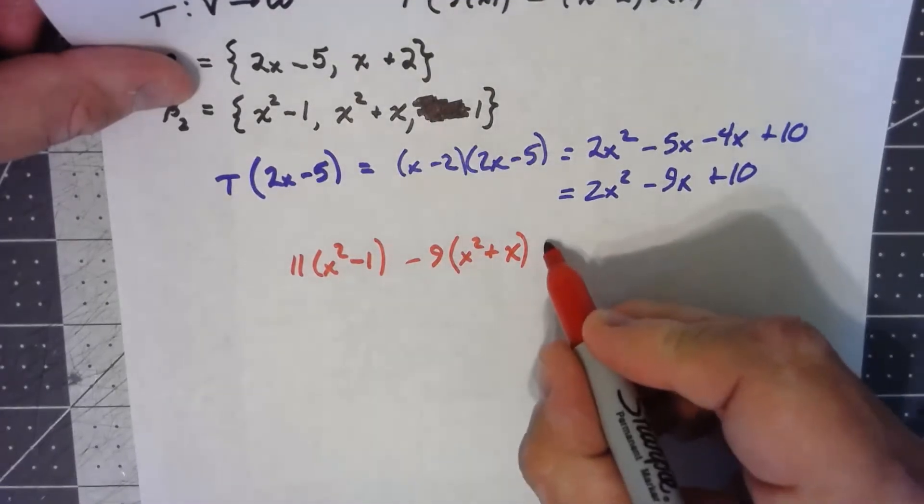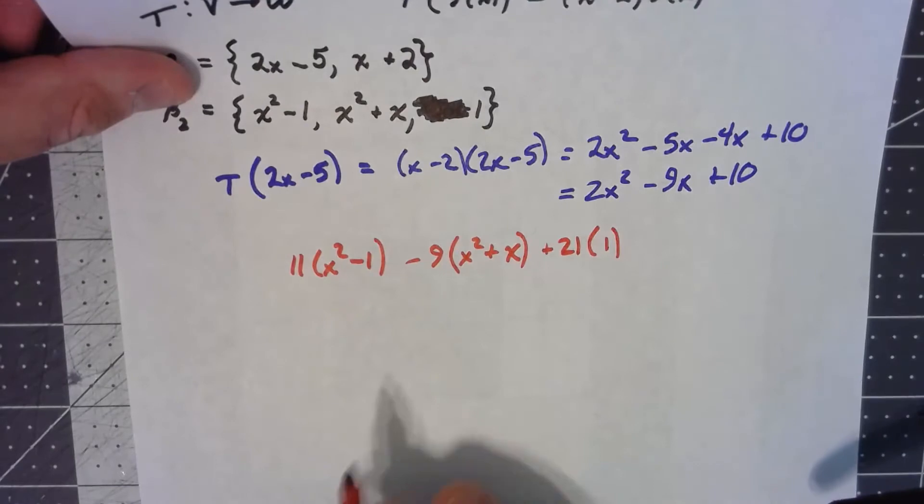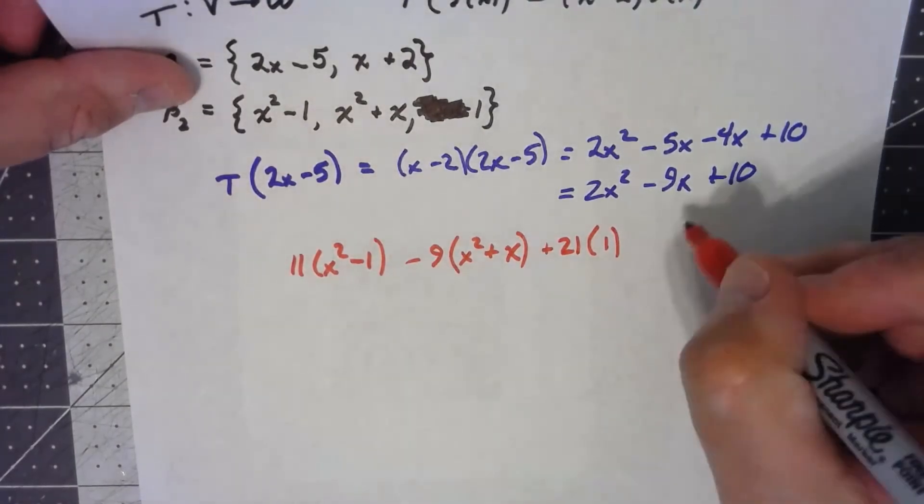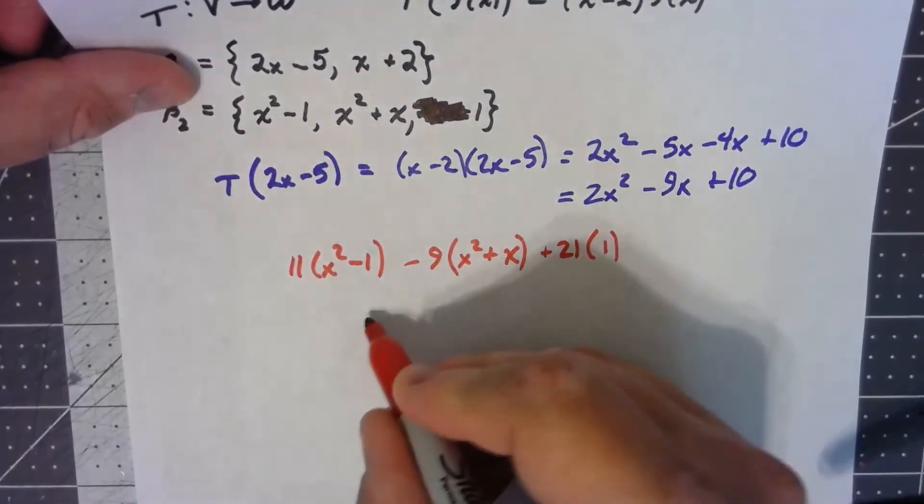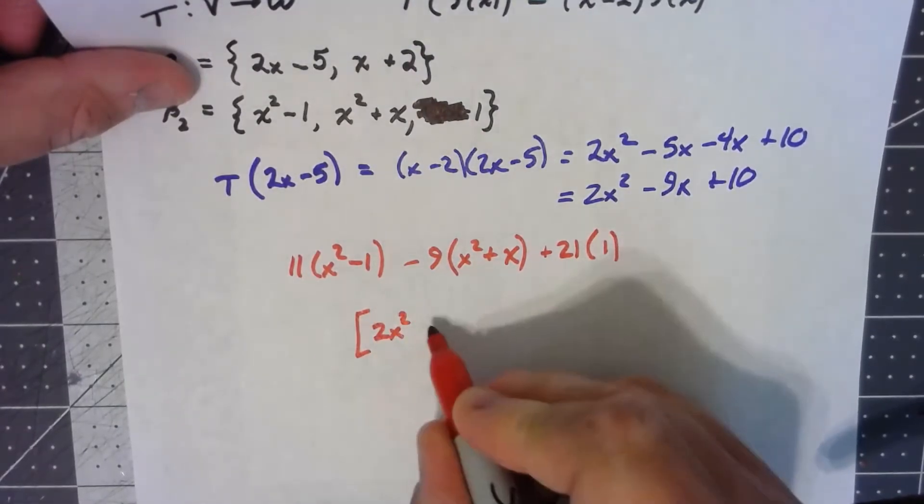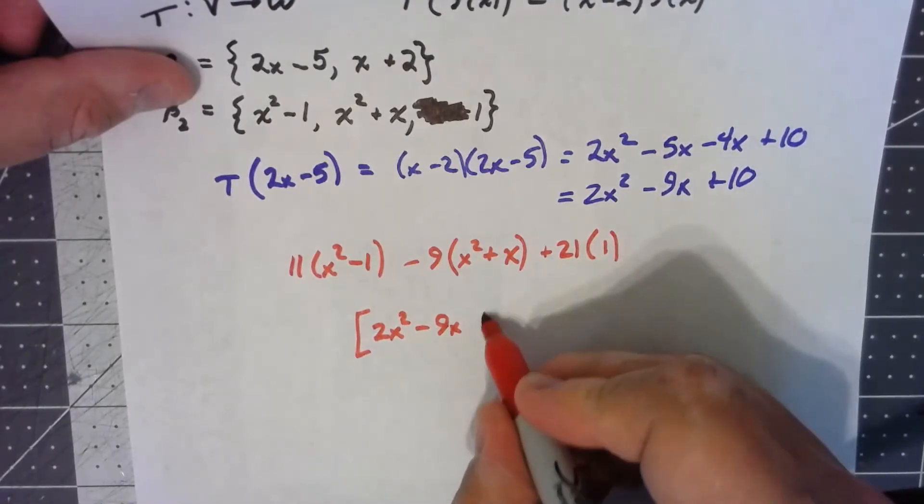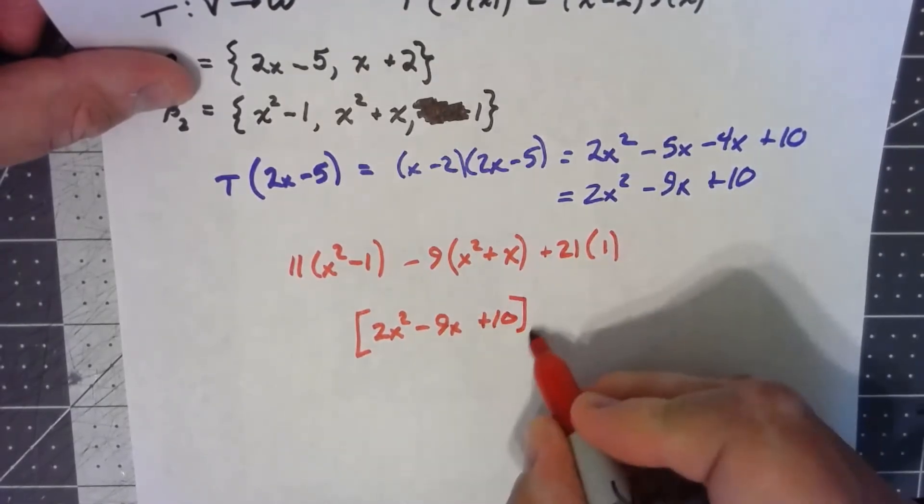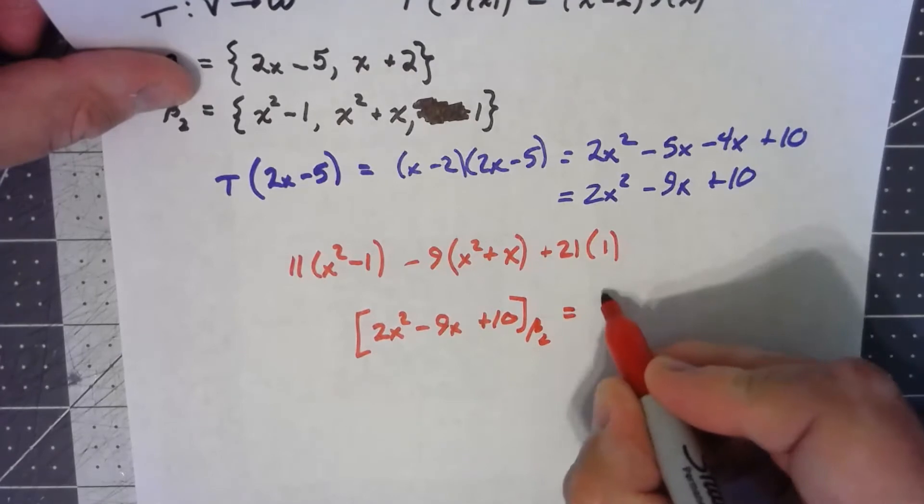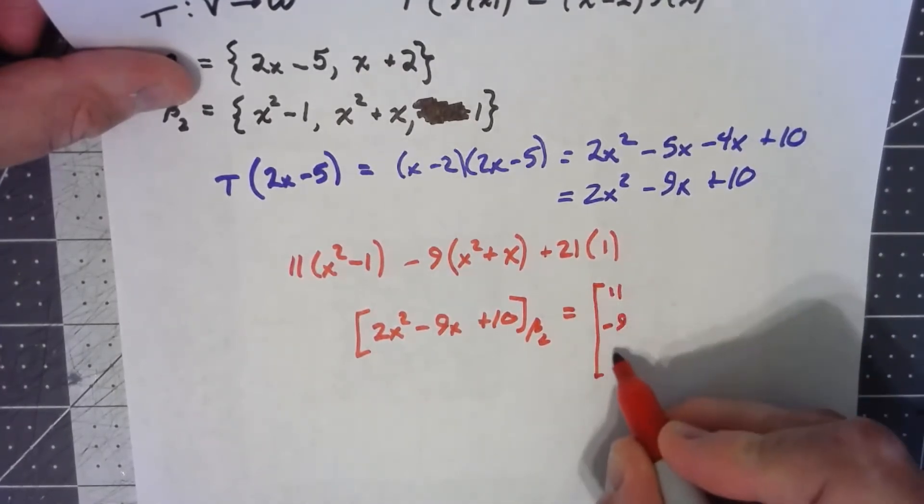Last thing is how do I deal with the constant? So far I've got negative 11 and I need plus 10, so I need plus 21 times 1. Making the coordinate vector for 2x squared minus 9x plus 10 with respect to beta 2 the vector 11, negative 9, 21.